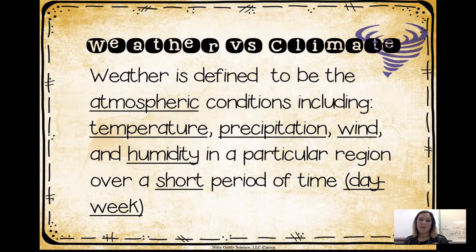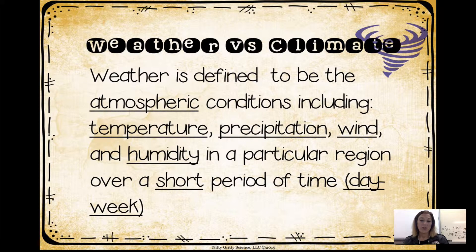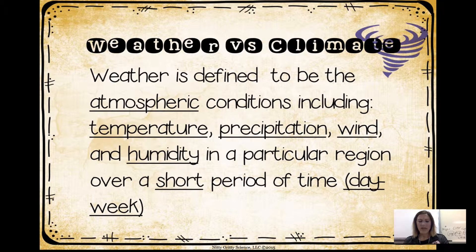First, the difference between weather and climate. Weather is defined as the atmospheric conditions, including temperature, precipitation, wind, and humidity in a particular region over a short period of time, either a day or a week. Typically when a meteorologist is on the news, he's telling you about the weather that is happening currently or within a day or a week. They don't generally go out 10 days or more, otherwise it would not be determined as weather.